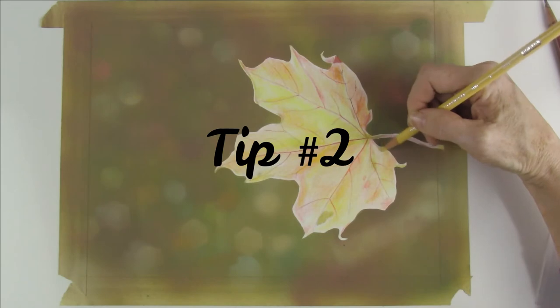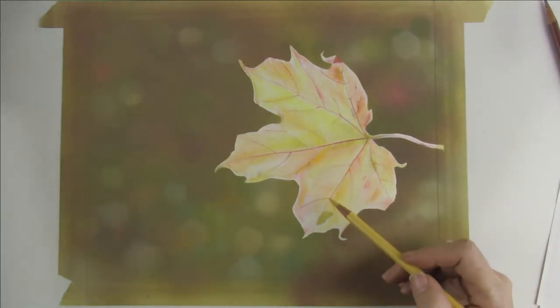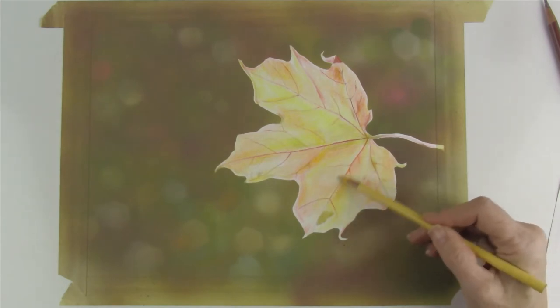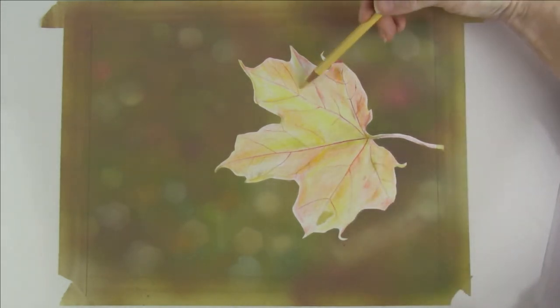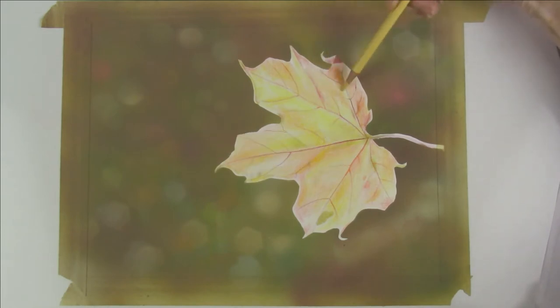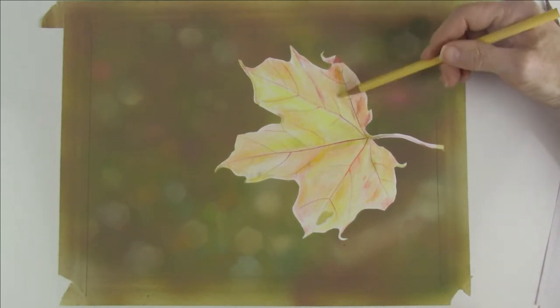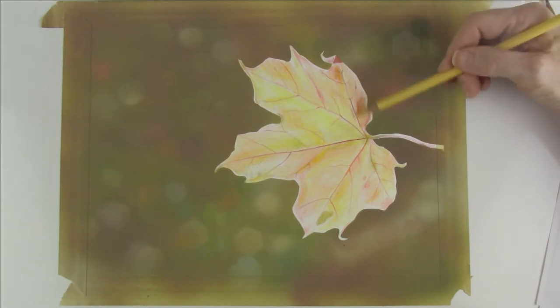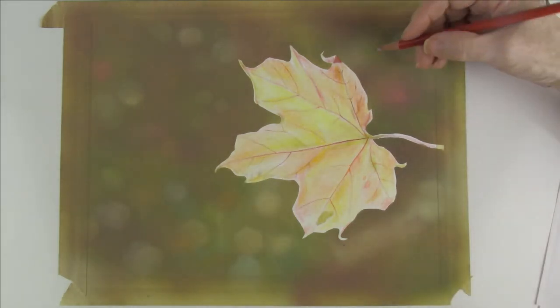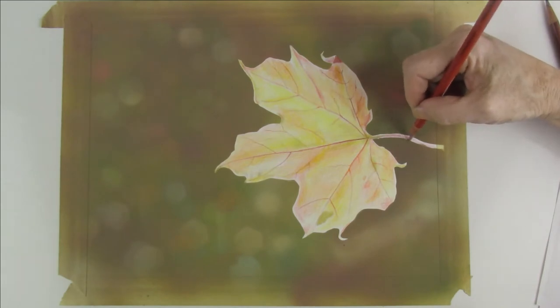Tip number two to achieve light layers is to lay the pencil more on its side rather than upright. And tip number three to achieve light layers, try applying circular or oval motions. It's best to avoid back and forth motions to prevent any stop and start lines.